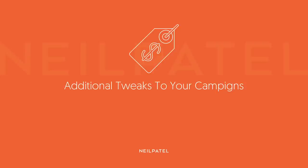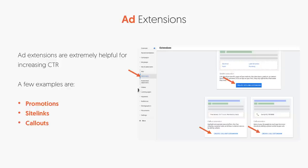Here are some additional tweaks you can make to your campaign to get a bit more ROI. Click on Add Extensions in the left-hand navigation and start considering things like promotions and site links. Adjusting these and calling out your products to make them stand out does help drive more sales.